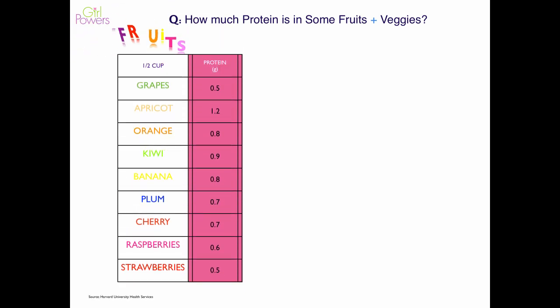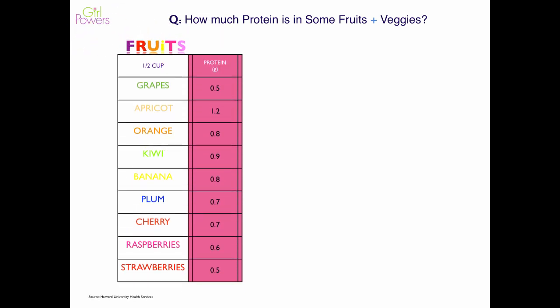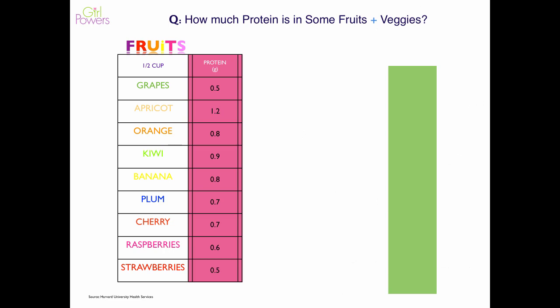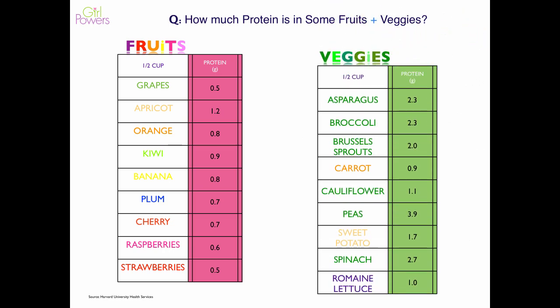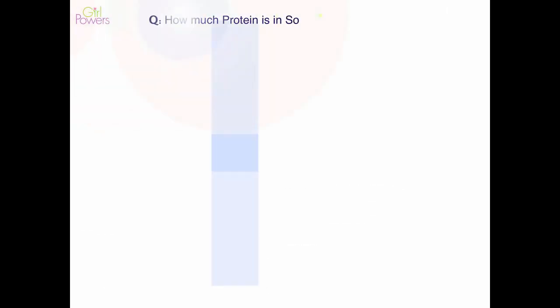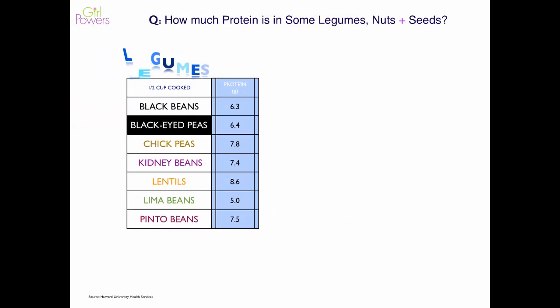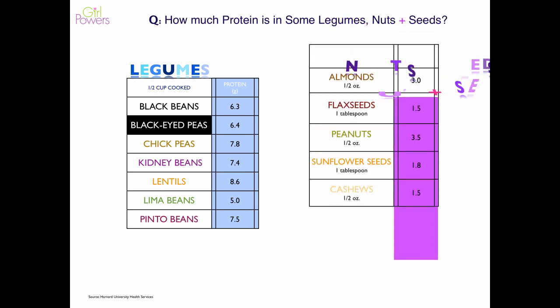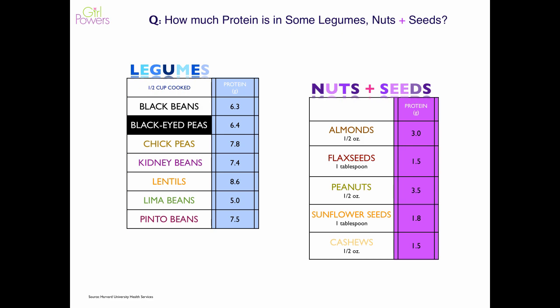How much protein is in some fruits and veggies? Listed here are some fruits by half-cup serving — fruit does have protein. Vegetables also contain protein, a little bit more than fruit for the most part. How much protein is in some legumes, nuts, and seeds? Legumes are a very good source of protein, and similarly, nuts and seeds are as well.